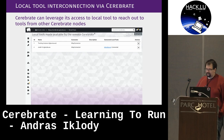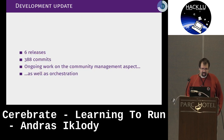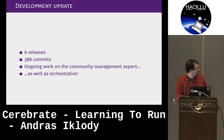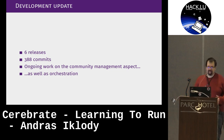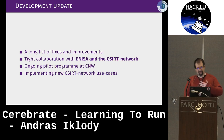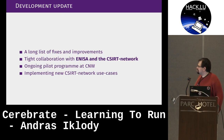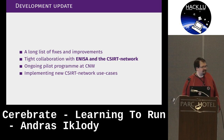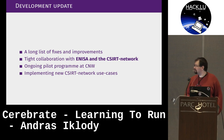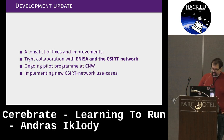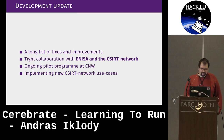A little about the development since last year: we've had six releases, almost 400 commits, and there's a lot of ongoing work on both the community management aspect and the orchestration tooling aspect. A lot of the fixes and improvements come from ENISA and the CSIRT network — big shout out to them for providing feedback, ideas on how to improve the tool, and for doing a lot of testing in the pilot.